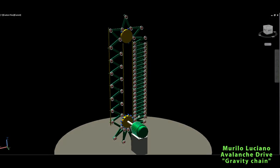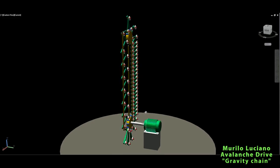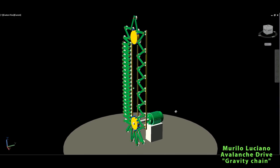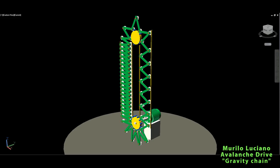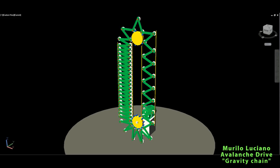This particular pattern here is given free to the public and it's called Murillo Luciano Avalanche Drive, or famously known as the gravity chain system.